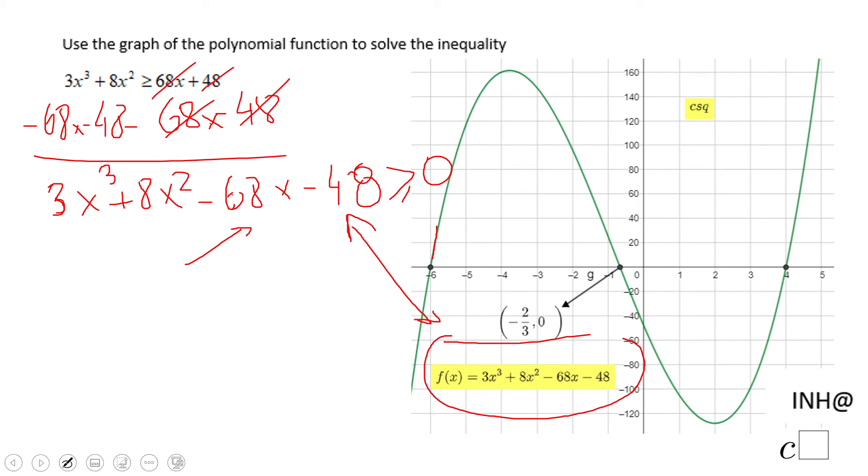From negative 6 to negative 2/3, and then from 4 to infinity. That's the solution set for this problem.